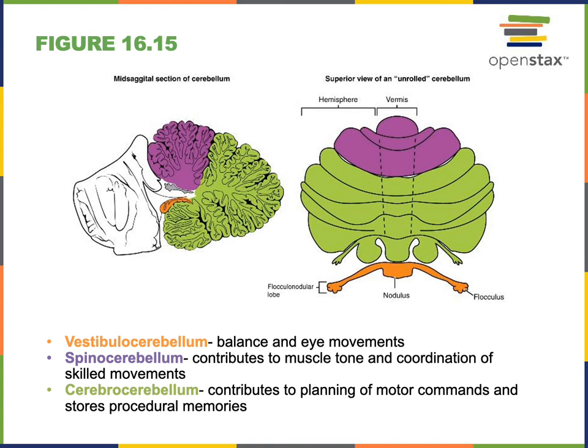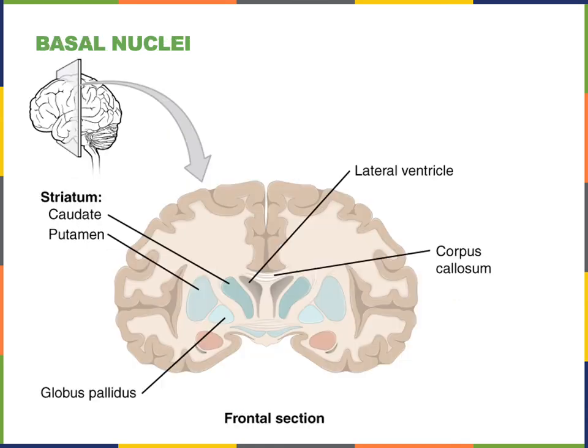The cerebrocerebellum is connected to the cerebrum and receives motor commands coming from the primary motor cortex. It uses that input to generate procedural memories and to develop a feed-forward control mechanism that can correct errors in motor commands in order to fine-tune motor commands.